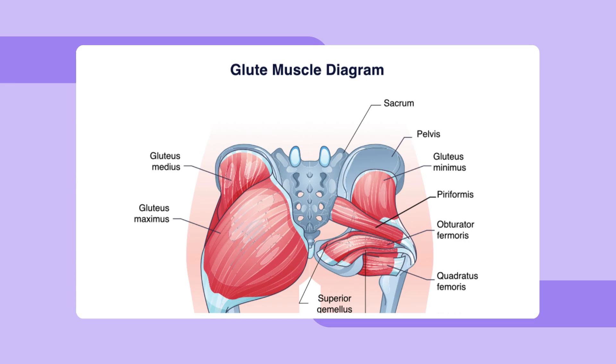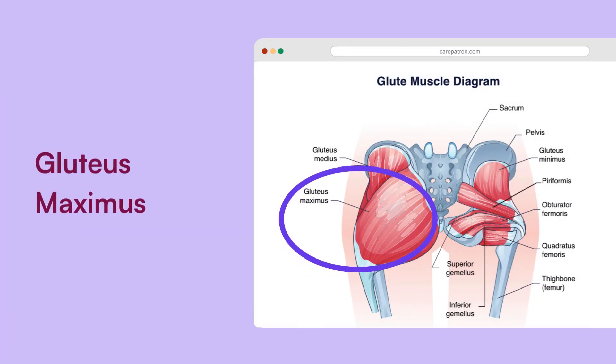The glute muscles in detail. Gluteus maximus: the largest gluteal muscle, responsible for hip extension, crucial in activities like standing up, climbing and running.